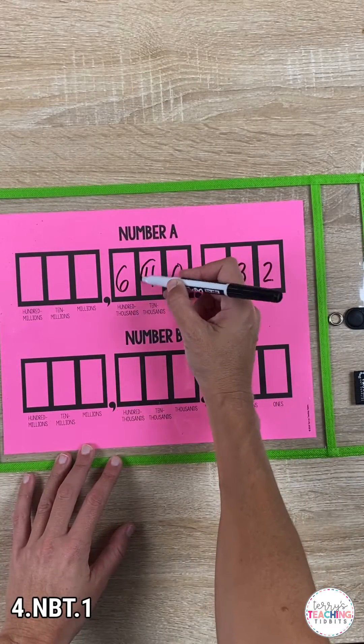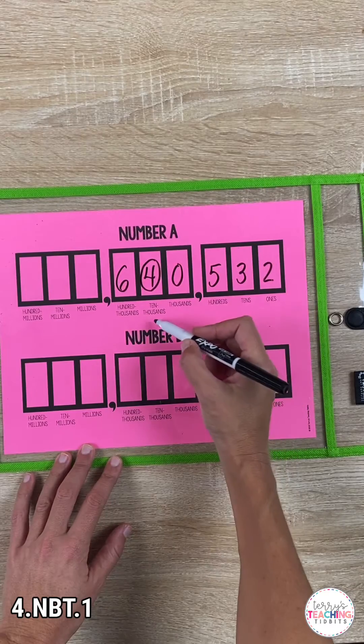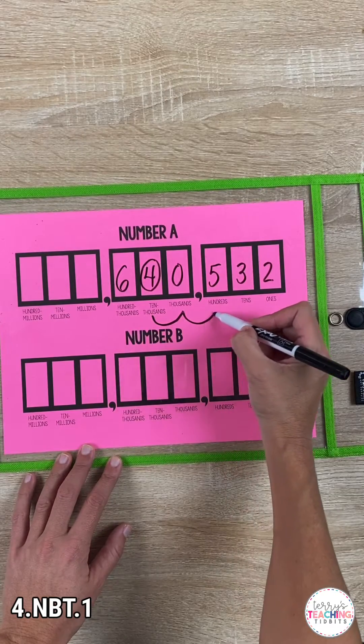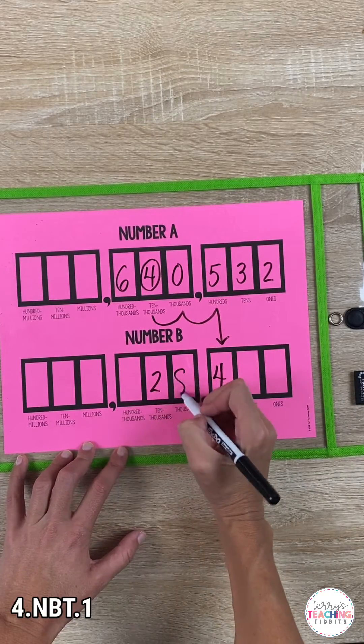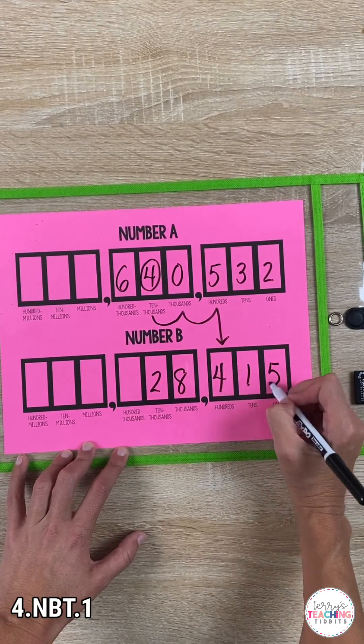To do this, they'll go back to the 4 in number A, circle it, and have them decrease it or move it to the right two place values so that the 4 in the ten thousands place is now in the hundreds place. Then they can fill in the rest of the digits.